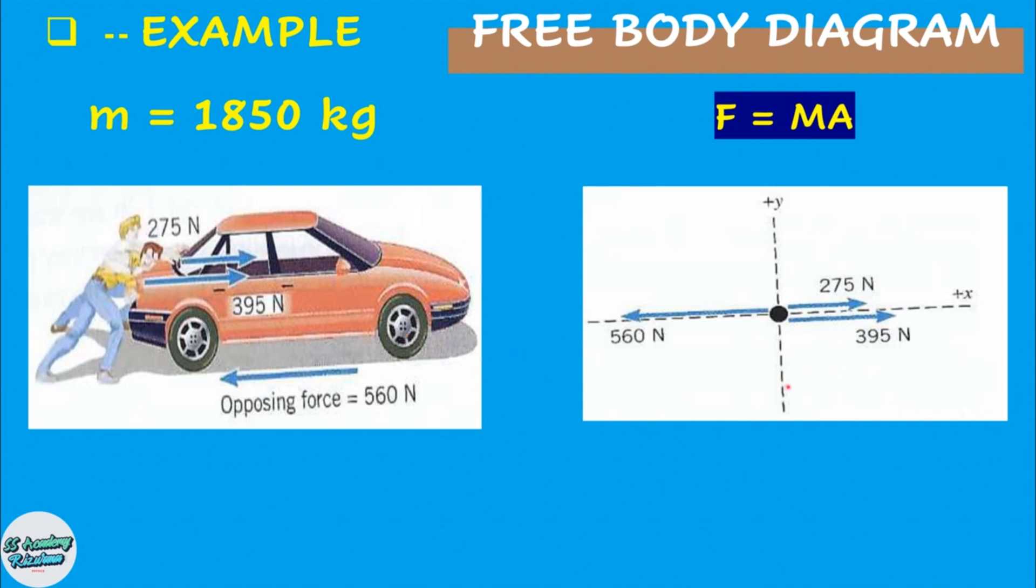Now this picture illustrates the use of a free body diagram. Here two people are pushing a stalled car. The mass of the car is 1850 kg. One person applies a force of 275 Newton to the car while the other applies a force of 395 Newton towards right hand side. Both forces act in the same direction. A third force of 560 Newton also acts on the car but in a direction opposite to that in which the people are pushing. This force arises because of friction and the extent to which the pavement opposes the motion of the tires.